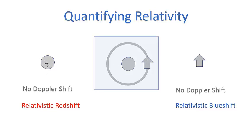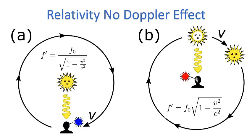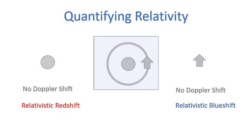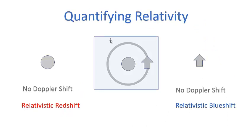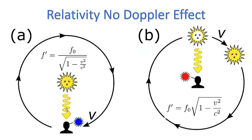From the perspective of the observer in the middle, they are going to see a relativistic redshift and will need to use the relativistic redshift correction formula, multiplying it by the frequency to get the corrected frequency. The object that is in motion is going to see a relativistic blueshift — this is the case where the observer is in motion and the source of radiation is at the center not in motion.